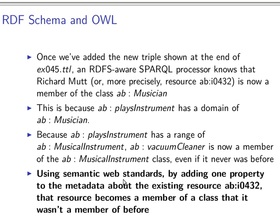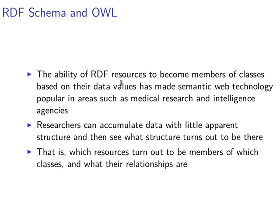Likewise, if we have a range for a certain property, then whenever we give the property a value, that value automatically becomes a member of that range class. This is a very interesting feature. It allows researchers to accumulate data with little apparent structure, but they can see the structure when they use Semantic Web technologies — because when properties link things to each other, and those properties have domains and ranges, many resources turn out to be members of classes and the relationships between them become much clearer.